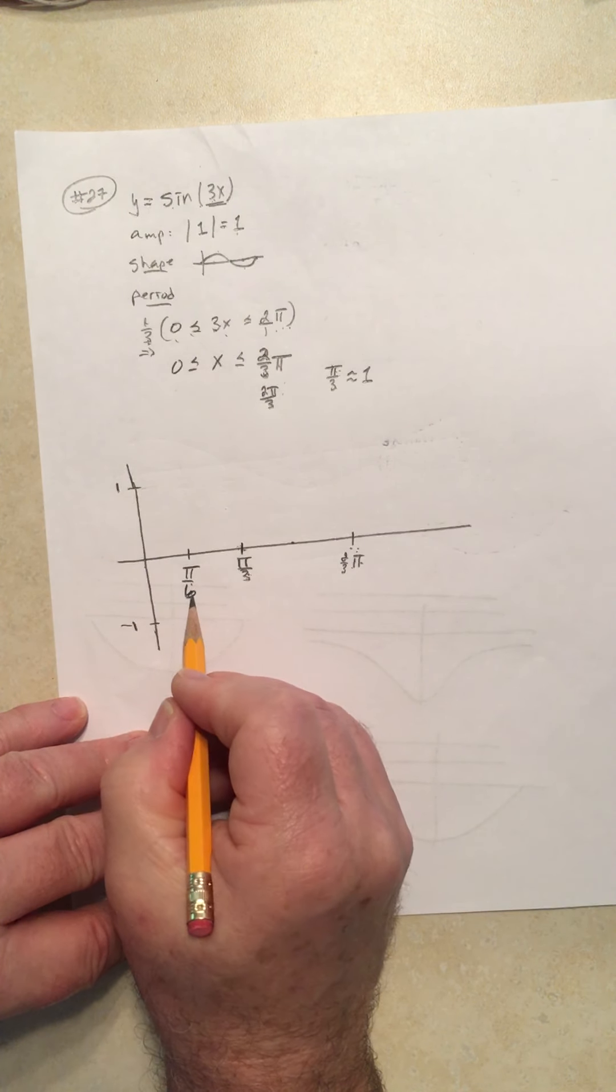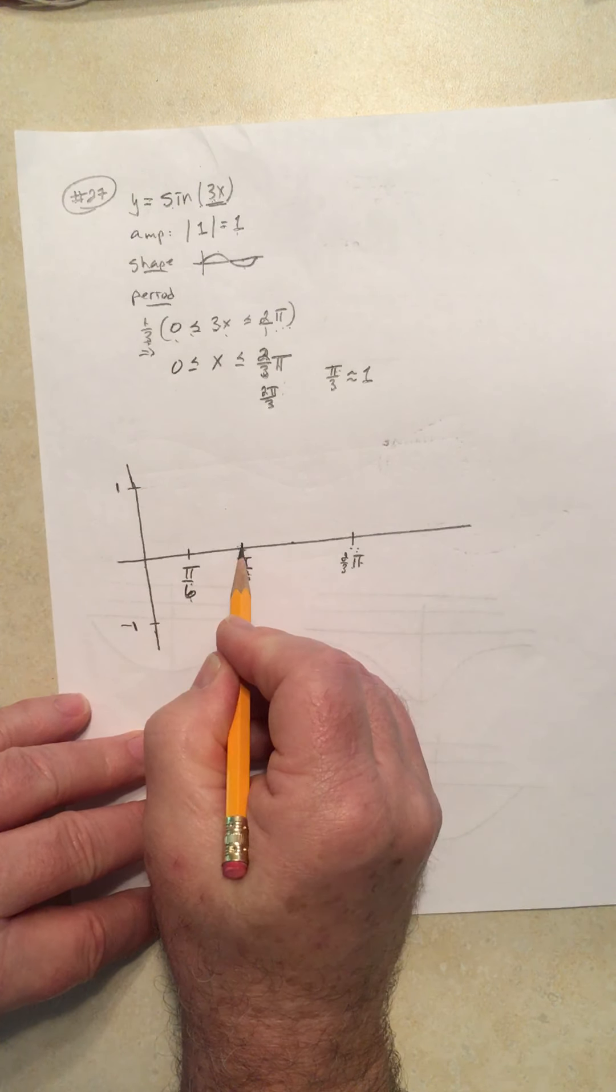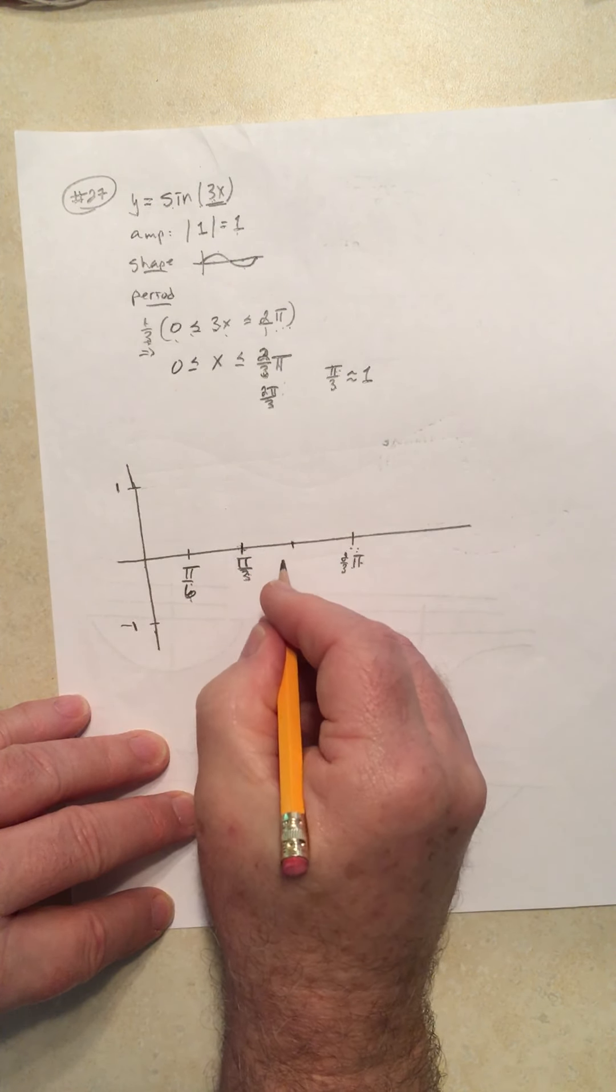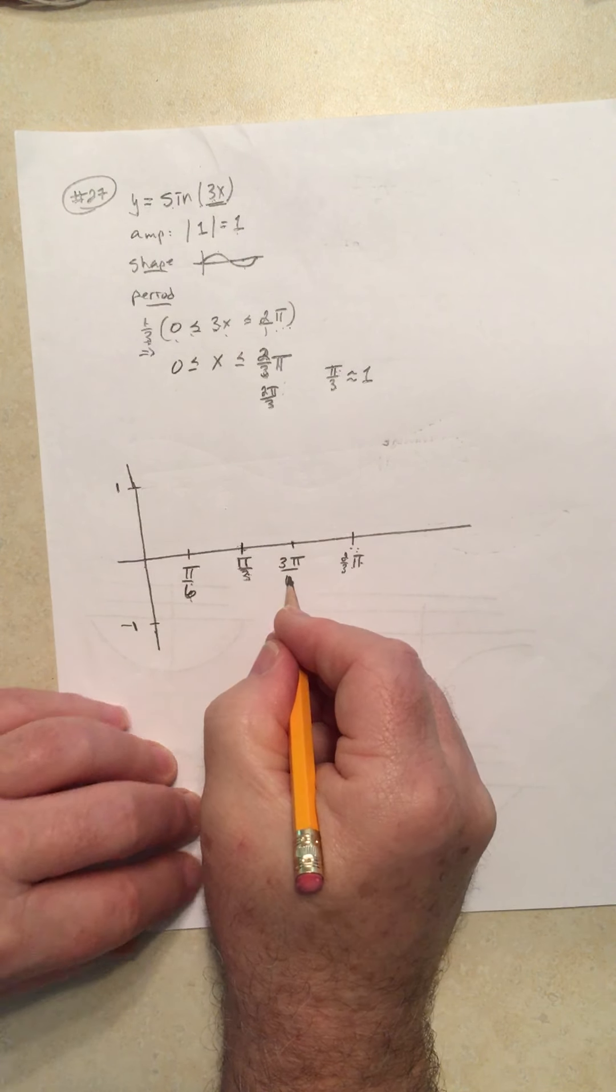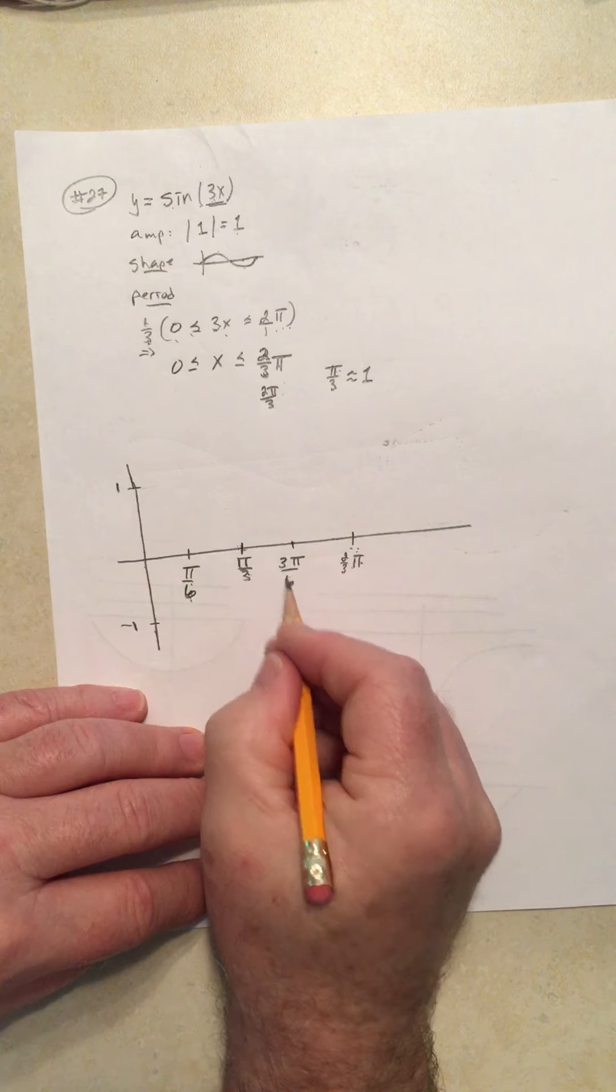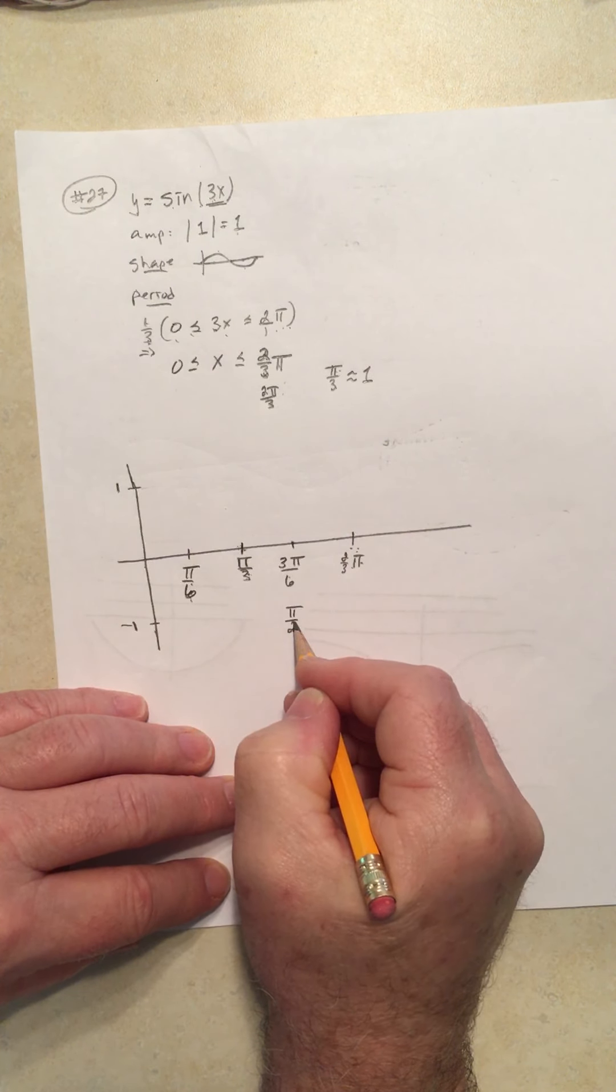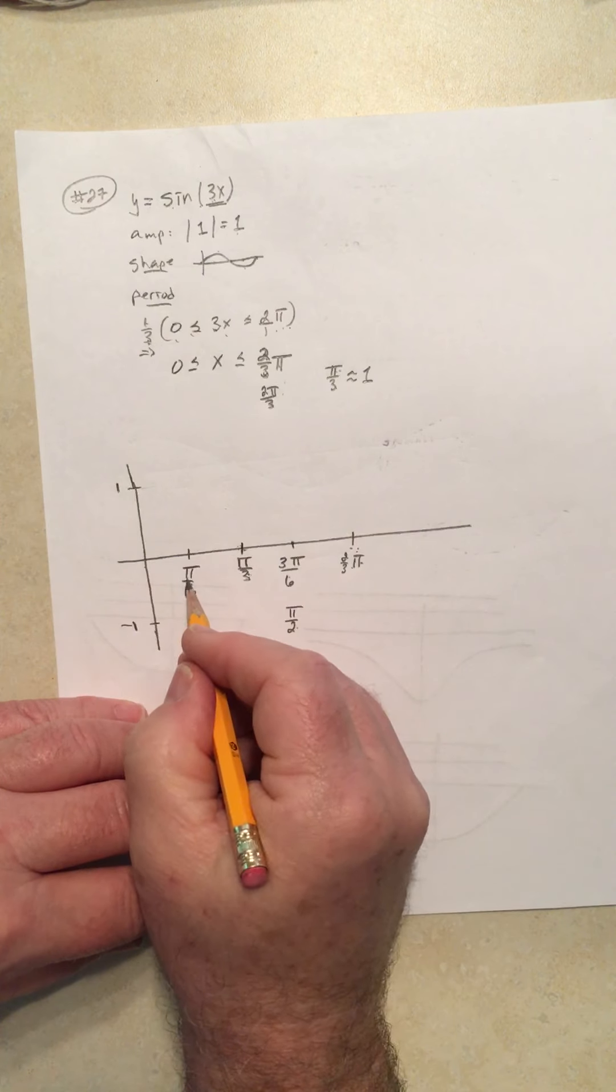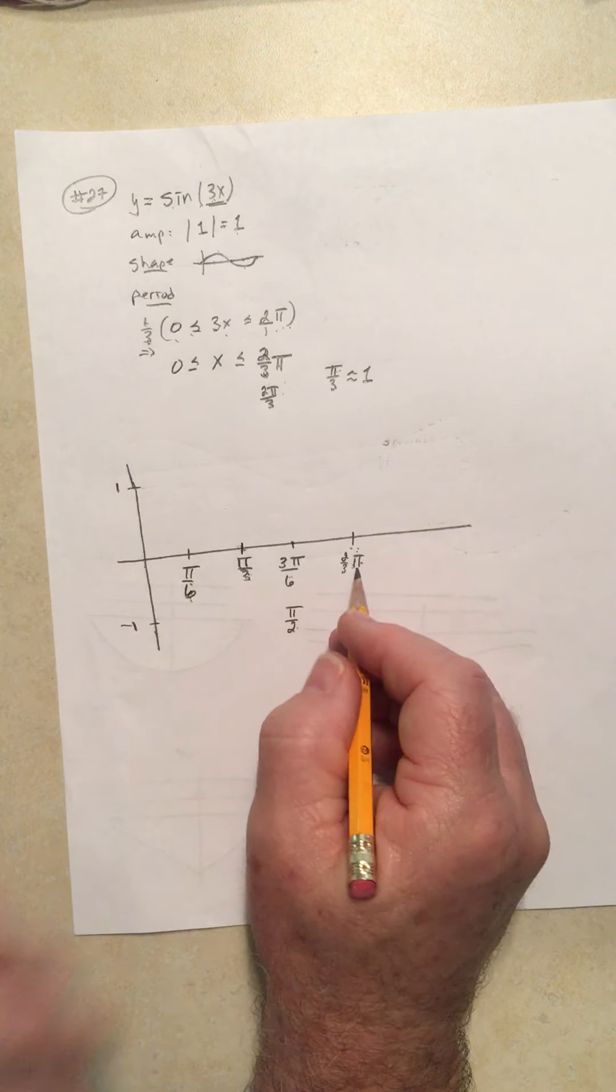Now just start counting in sixths. 1/6, 2/6, 3/6. This is 3π over 6. Some people would balk at that - they say you need to reduce 3/6 to π over 2. If you wish, you may, but there's nothing that requires it. 1/6, 1/3, 3/6, 2/3. That's fine.